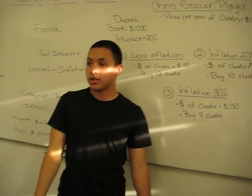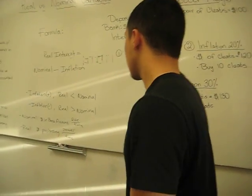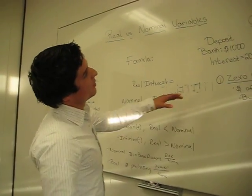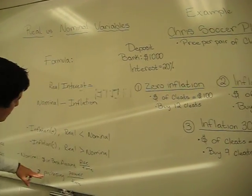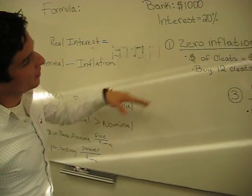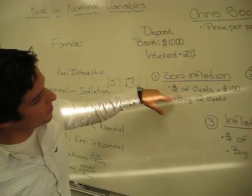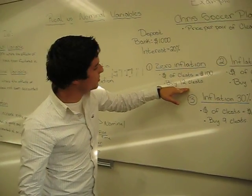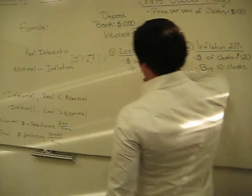And we're going to have Stephen finish it off to discuss how this formula relates to the example. All right, to start off, Chris's purchasing power is $1,000. Over time, inflation is at zero. His purchasing power is $100 per cleat. He can buy 12 cleats.